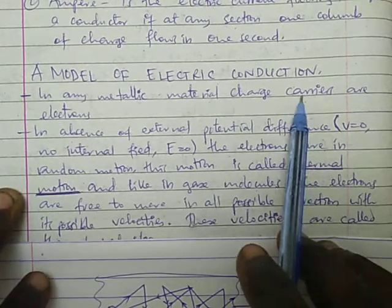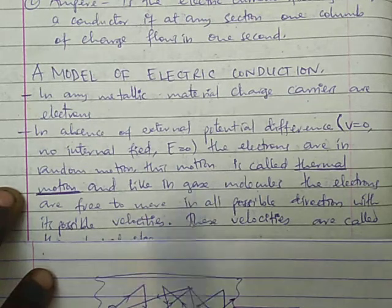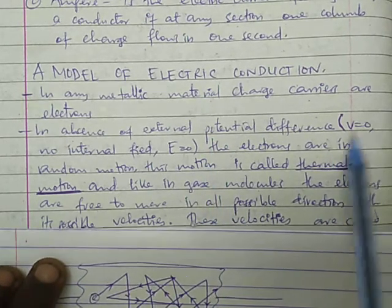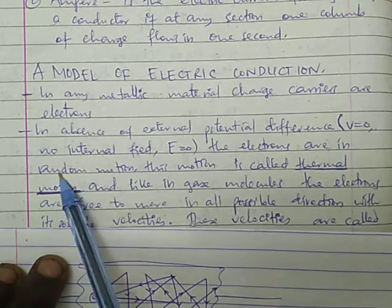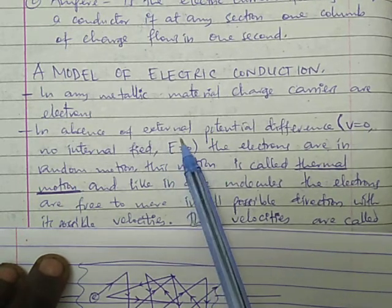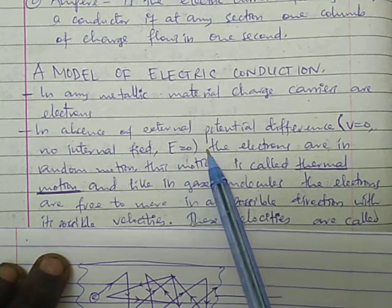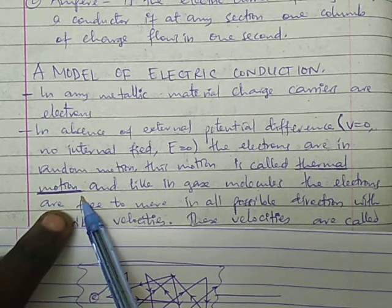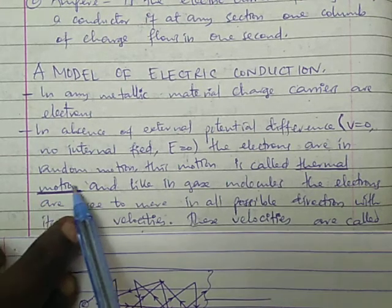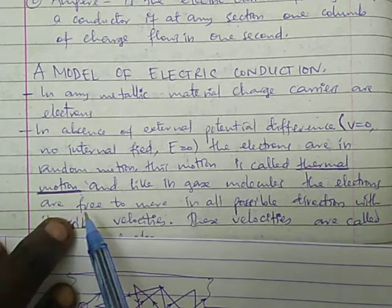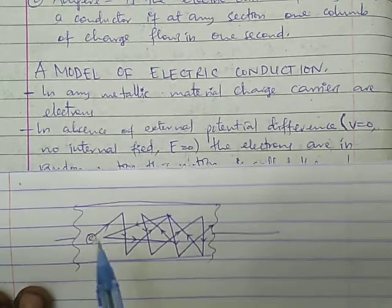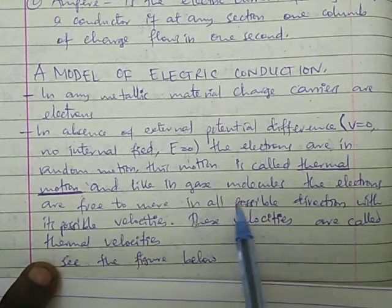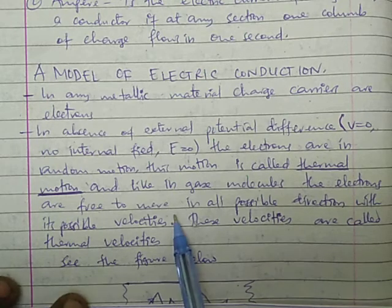In any metallic material, the charge carriers are electrons. In the absence of external potential difference (V equals zero) and no internal electric field (E equals zero), the electrons undergo random motion. This motion is called thermal motion because it is influenced by heat energy. Like gas molecules, the electrons are free to move in all possible directions with all possible velocities. These velocities are called the thermal velocity.